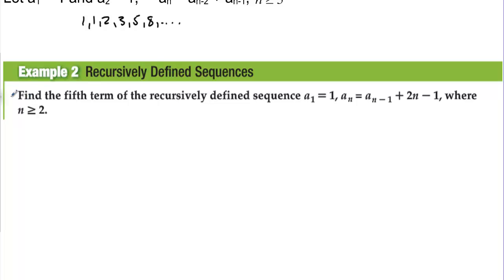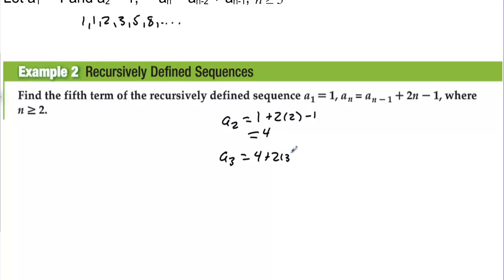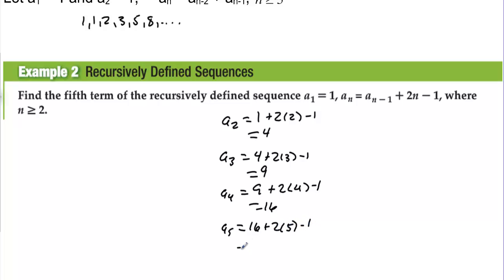Example 2: Recursively defined sequences. Find the fifth term of the recursively defined sequence where n is greater than or equal to 2, with A sub 1 equals 1, and A sub n equals the previous term plus 2 times (n minus 1). A sub 2 equals 1 plus 2 times (2 minus 1) equals 4. A sub 3 equals 4 plus 2 times (3 minus 1) equals 9. A sub 4 equals 9 plus 2 times (4 minus 1) equals 16. A sub 5 equals 16 plus 2 times (5 minus 1) equals 25. The fifth term is 25.